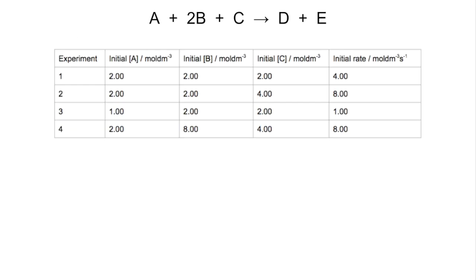Typically the data will be presented in a table like this. You can see we've got four experiments with the initial concentrations of A, B, and C — all the reactants — and we're also given the initial rates. Now, you can't tell from the chemical equation what the order is with respect to a reactant. Sometimes students think it's first order for A and C and second order for B, but you can't tell from the equation — you've got to look at the link between the changes in concentration and the changes in the rate.